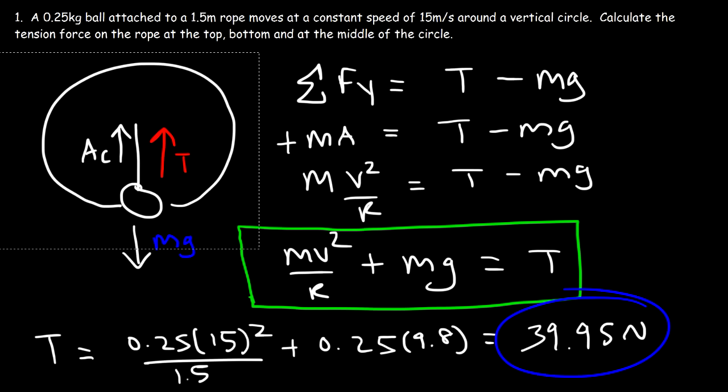Now let's calculate the tension force at the middle of the circle. If the ball is moving fast enough, the tension force is approximately equal to the centripetal force: t ≈ 0.25 × 15² ÷ 1.5, which gives about 37.5 newtons. That's an approximation; if it's not moving fast enough, the answer will vary a little.